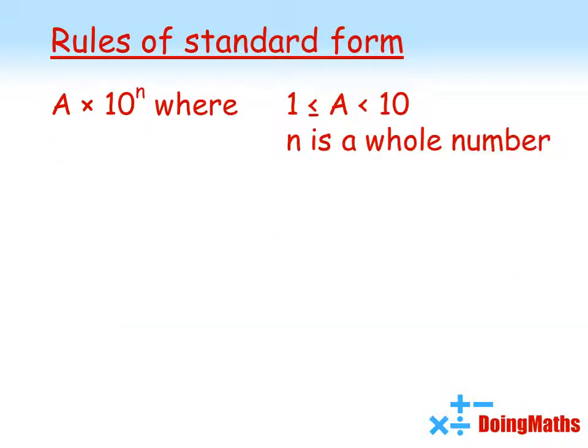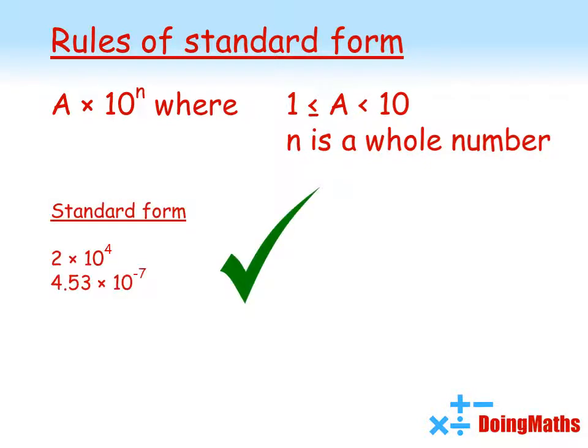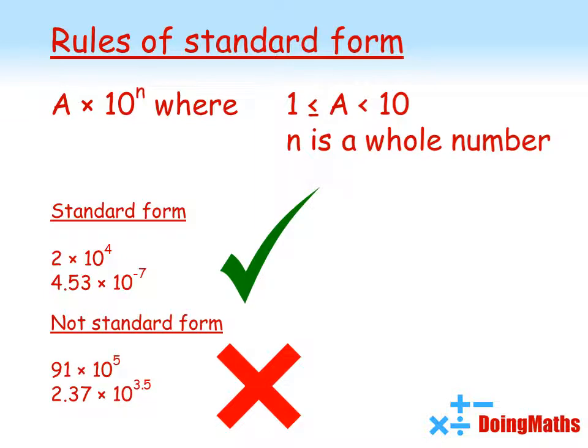So the rules of standard form. If you're converting a number into standard form it has to be written where a is a number between 1 and 10, and n, the power of 10, has to be a whole number. For example, these two numbers are in standard form: 2 is between 1 and 10, 4.53 is also between 1 and 10, and the powers on both of them are whole numbers. These two numbers aren't written in standard form — the first one, 91, is not between 1 and 10, and the bottom number has a power of 10 that isn't a whole number, so again that is not in standard form.